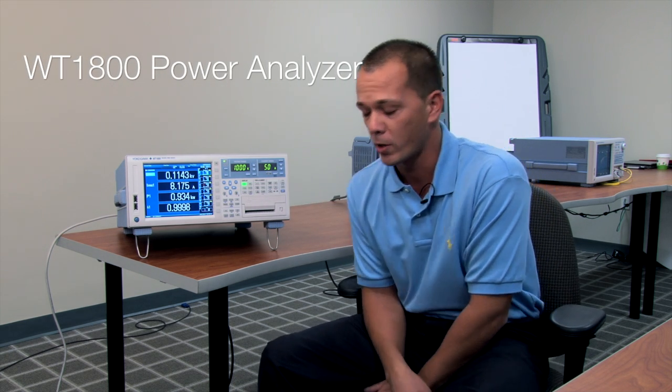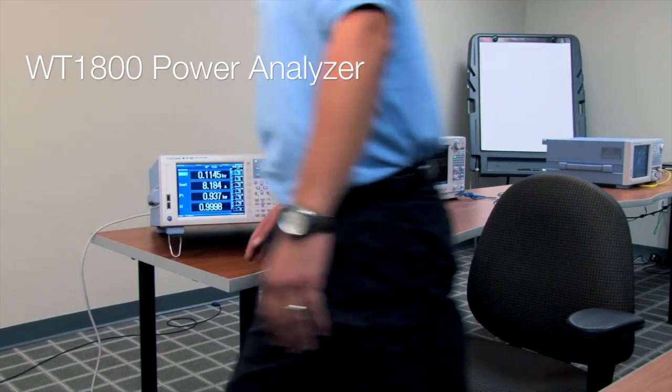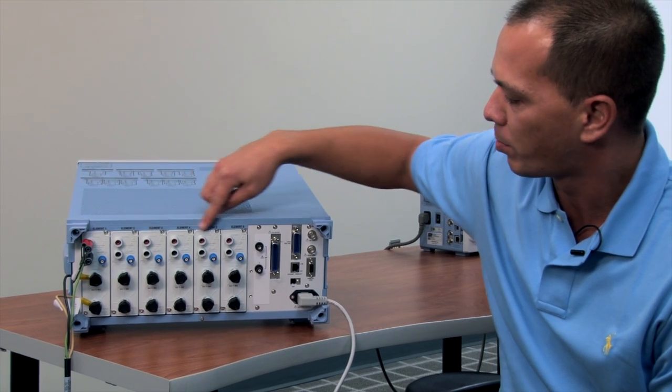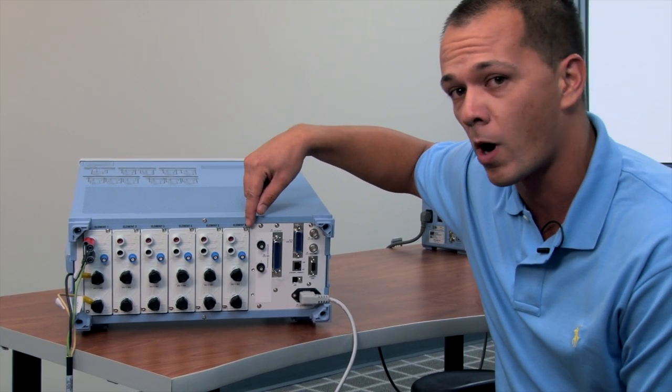Before showing you how the instrument works, I wanted to briefly turn the instrument around. You can get a WT1800 configured with up to six input elements, each input element being one watt meter.